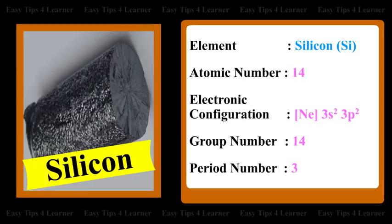For the element Silicon, the atomic number is 14. The electronic configuration is Ne 3S2-3P2. The group number is 14 and the period number is 3.